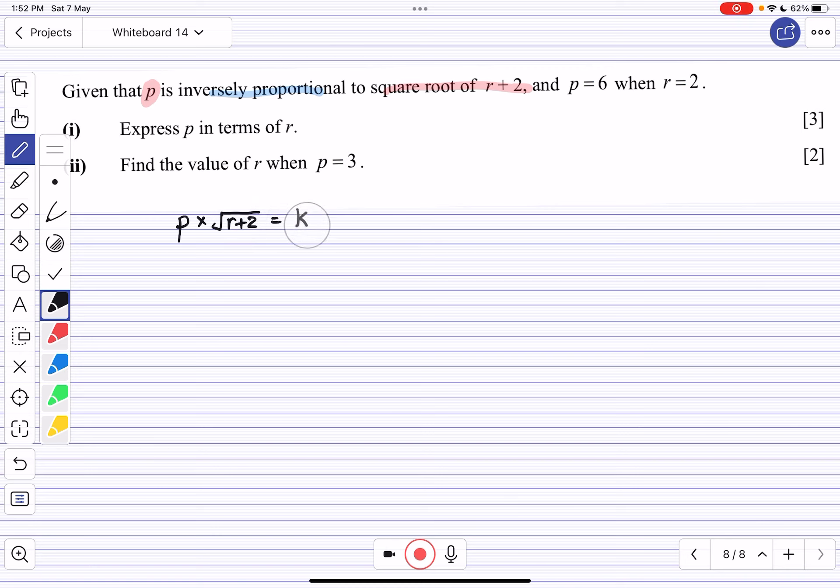Equals k. This question is easy, so there's no need for two sets of values like p1, k1 or p0, k0—that's for percentage decrease questions. Remember, don't overthink. From here, we can use the given values: when p equals 6, r equals 2.